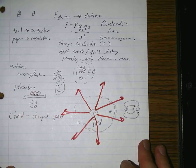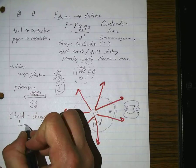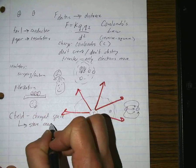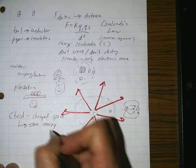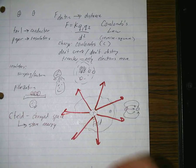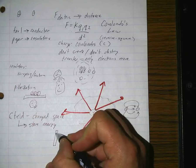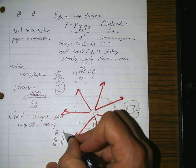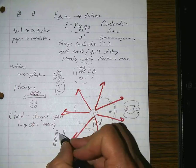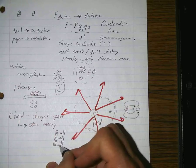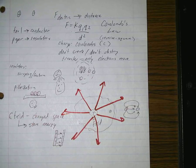Why did we care about that? Well, mainly because electric fields store energy. We saw that with capacitors and the Leiden jar — when you separated charges and put positives on one plate and negatives on the other, it created a strong electric field that could store energy for a long time if you needed it to.